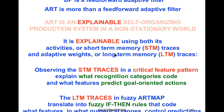ART is explainable using both its activities — short-term memory (STM) traces — and its adaptive weights — long-term memory (LTM) traces. Observing the STM traces in a critical feature pattern explains what recognition categories will learn to code and what features predict goal-oriented actions. In particular, the long-term memory traces in the fuzzy ARTMAP algorithm translate into explicit fuzzy if-then rules that code what combinations of critical features in what numerical ranges effectively control predictions, illustrating one of many examples where neural networks can learn rule-based behaviors.